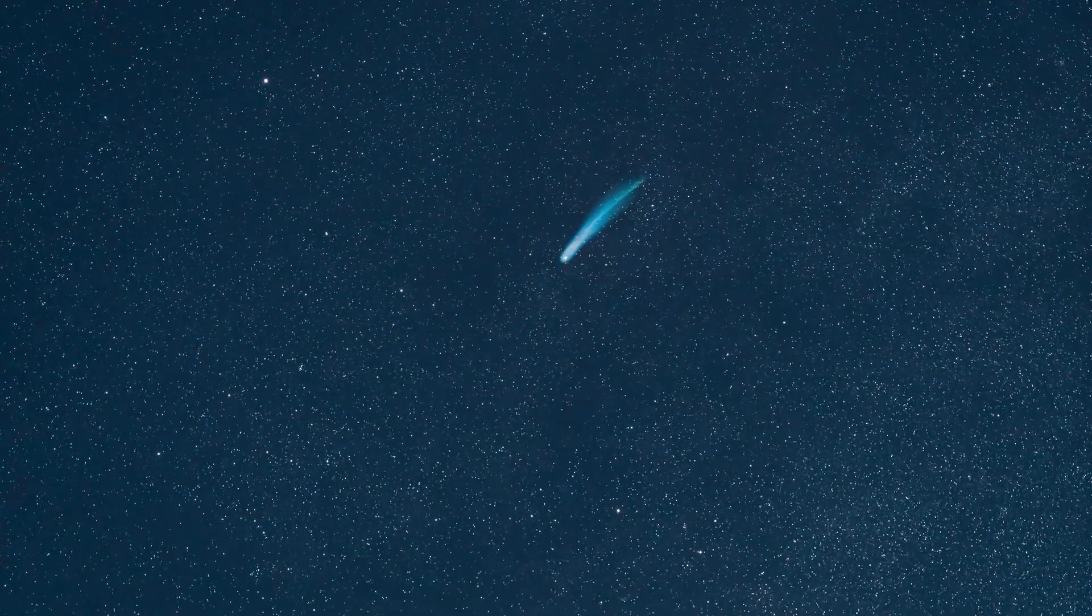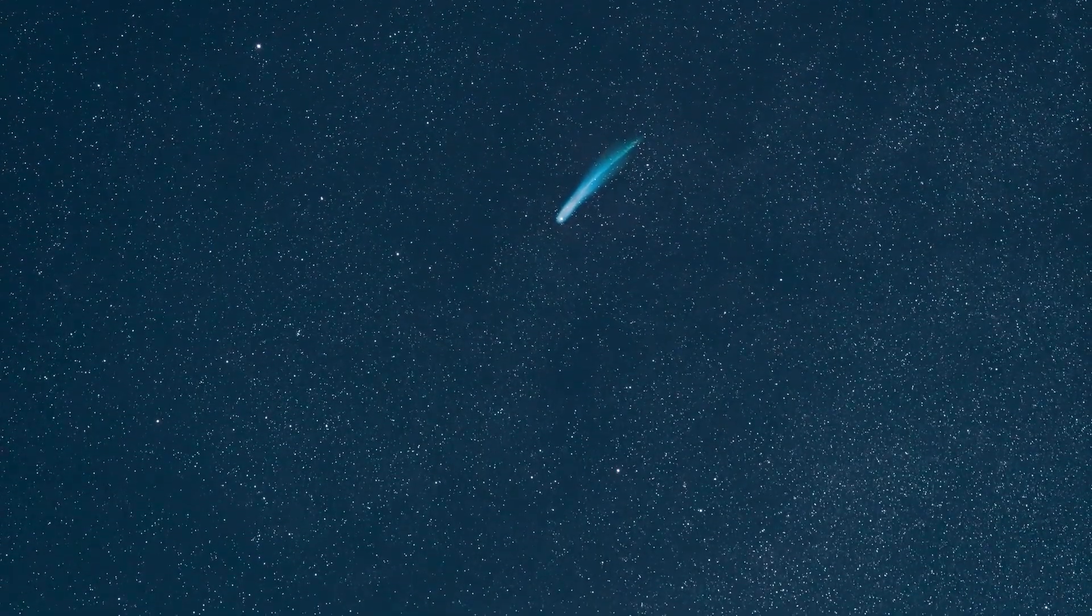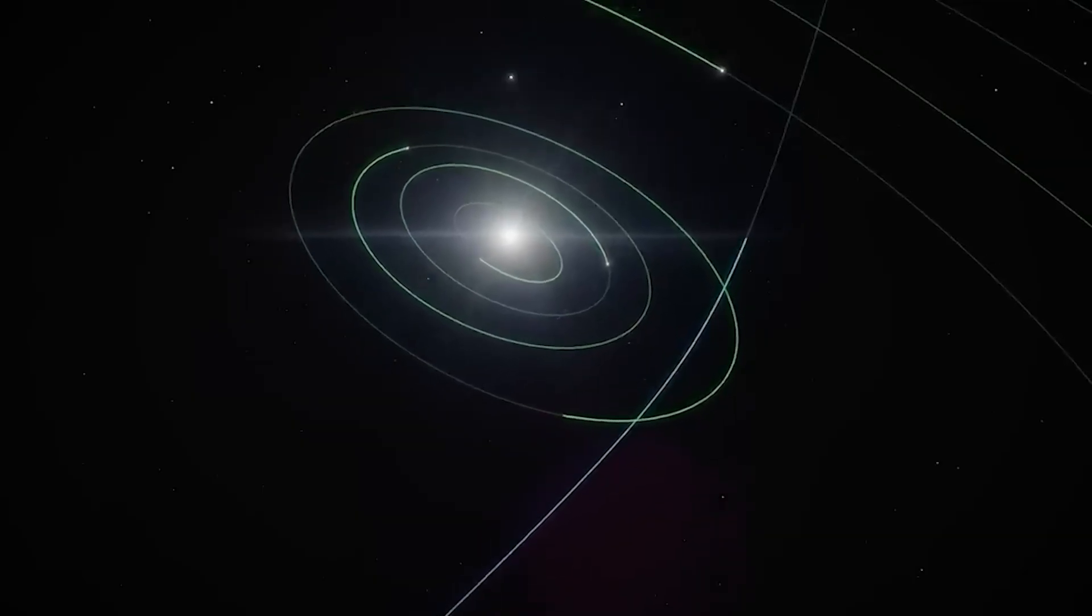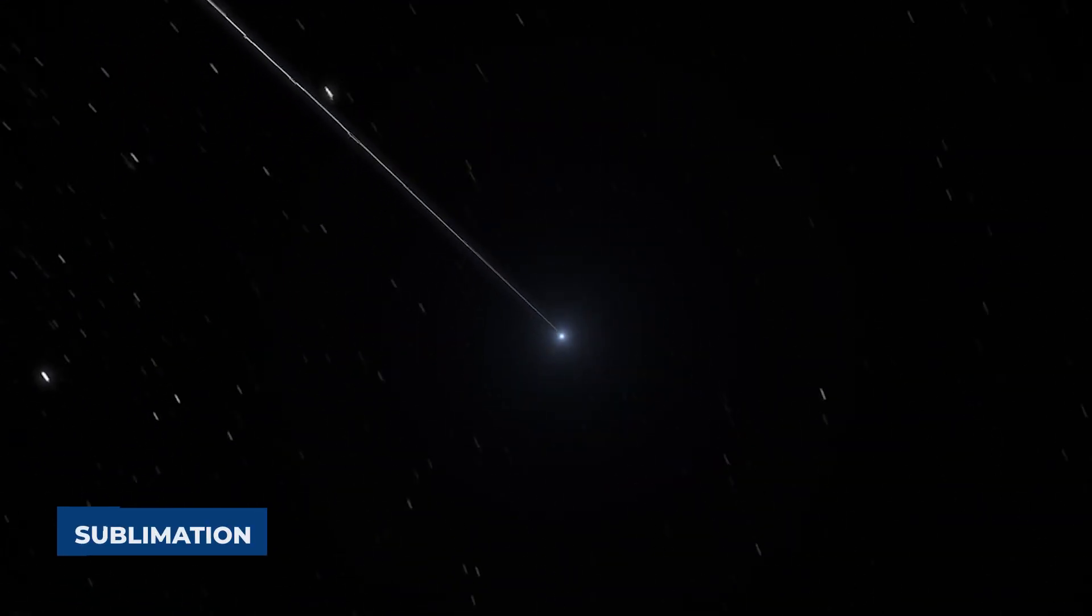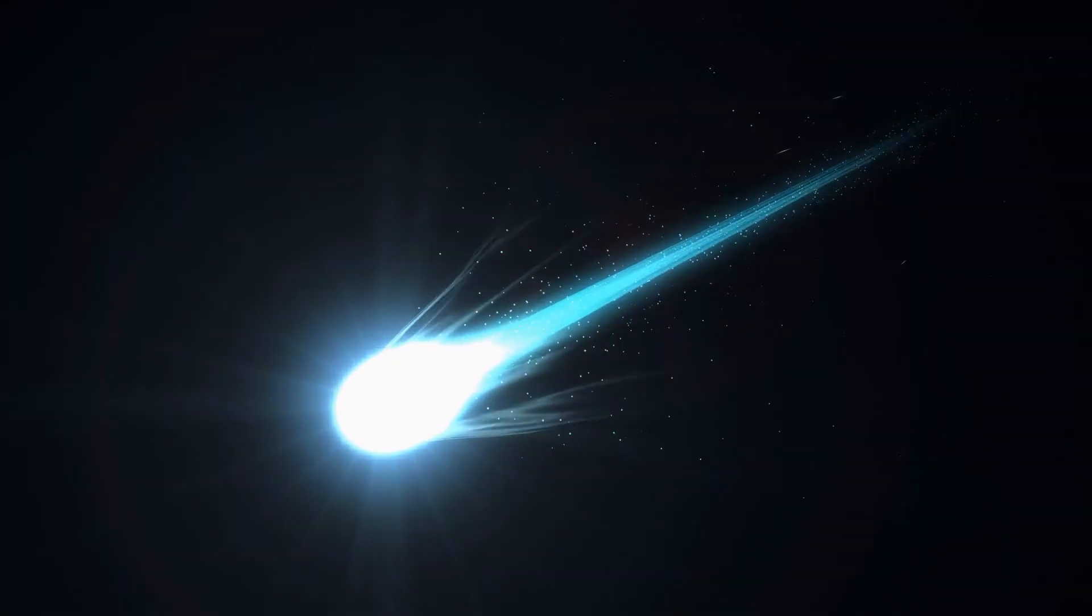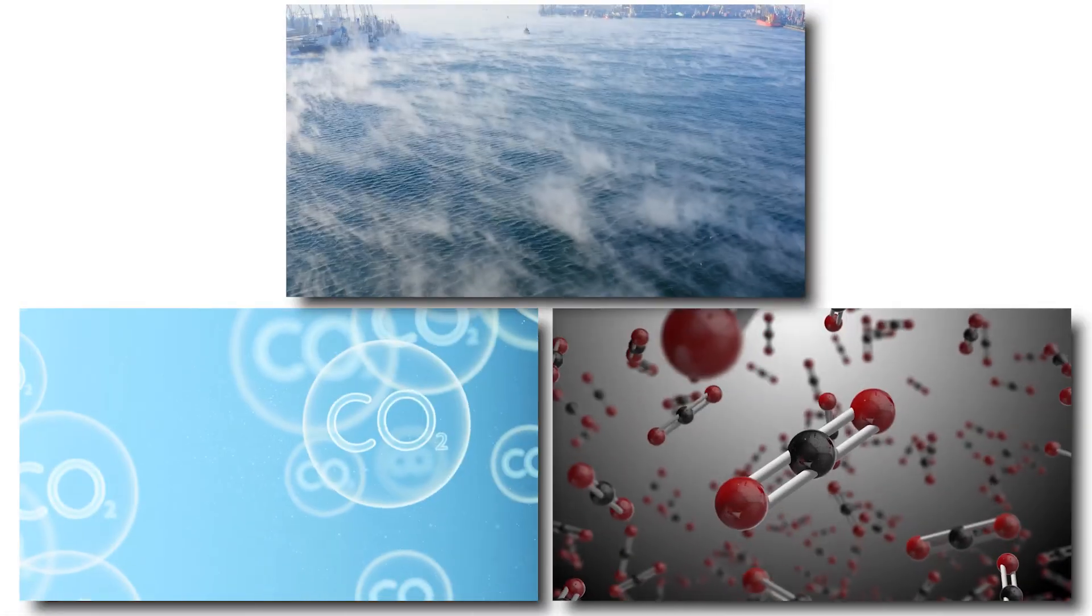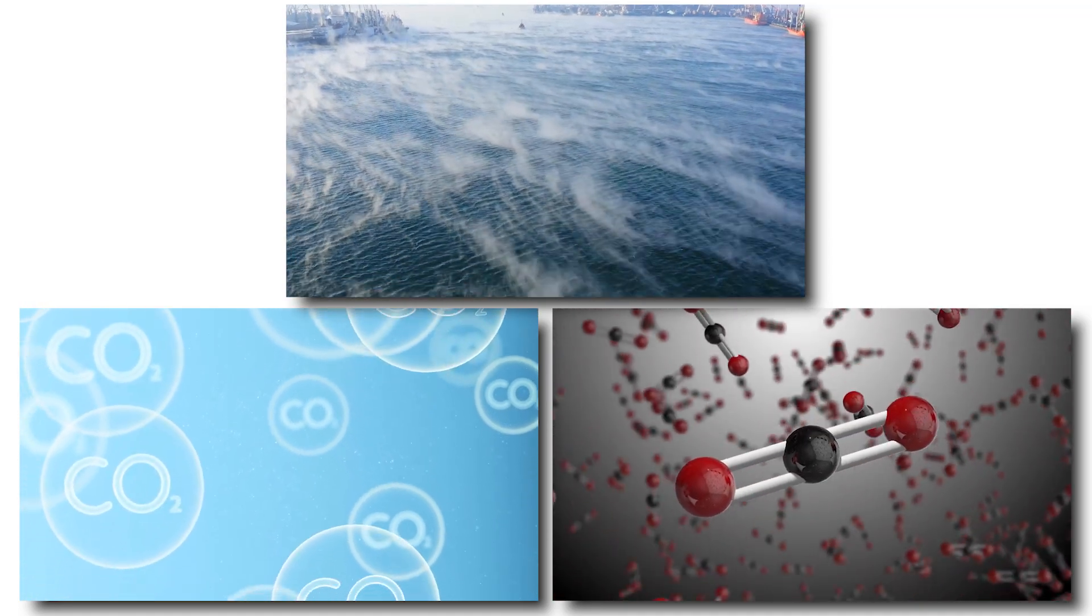Comets are essentially giant dirty snowballs, sometimes miles wide. As they get closer to the sun, the heat causes their ice to turn directly into gas, a process called sublimation. This creates the beautiful tail we see from Earth. Typically, this tail is mostly made of water vapor, carbon dioxide and other simple compounds.